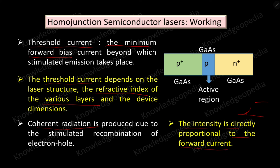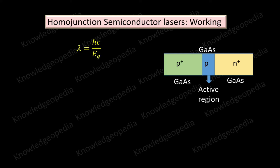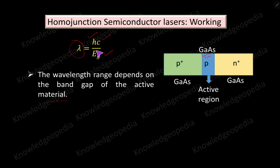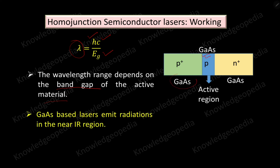As the current increases, the number of radiations increases, leading to greater intensity. According to Planck's law, λ = hc/Eg, where λ is the wavelength of emitted light, h is Planck's constant, c is the velocity of light, and Eg is the energy gap. The wavelength of the emitted light depends inversely on the bandgap of the active material, since lasing action takes place in the active region.